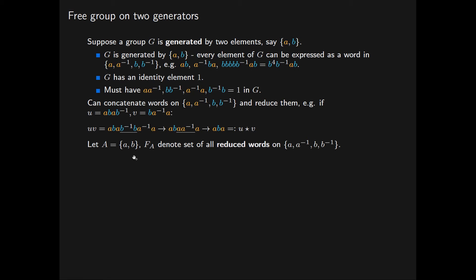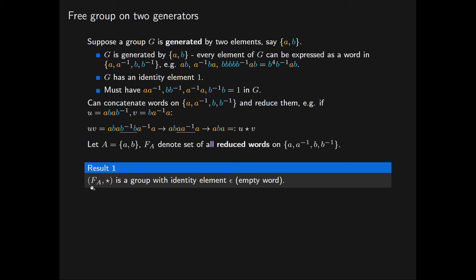Now if we forget that a and b are elements of a group G and just consider them as arbitrary letters—we call that set A—if we let F(A) denote the set of all reduced words on these four letters a, a inverse, b, b inverse, we have the following result. F(A) with this binary operation of star forms a group with an identity element that we will call epsilon, the empty word, the word of length zero.